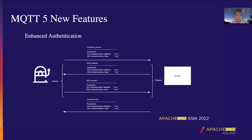The next feature is enhanced authentication. In the previous MQTT protocol, we could only use basic authentication through username and password, or use a token to fill in the password field. The enhanced authentication of MQTT 5 introduces a new mechanism that provides an authentication method and authentication data. It specifies the method and the related authentication data. It also introduces a new MQTT packet, the AUTH packet. This packet can support mutual authentication between the broker and client at any time, and will allow you to implement authentication standards such as SCRAM, Salted Challenge Response Authentication Mechanism, or the Kerberos protocol.